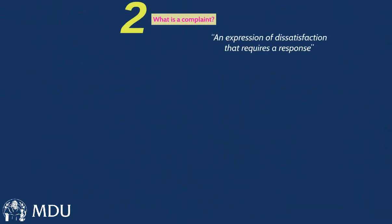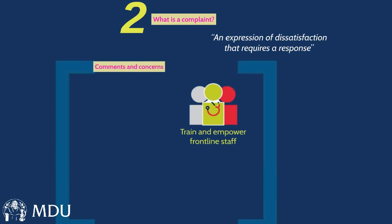I want to talk about identifying what a complaint is. We all recognise a complaint when we see it though it can sometimes be a little bit hard to define. I don't think we should be any more complicated than saying it is an expression of dissatisfaction that requires a response. A lot of our members ask about what constitutes a formal and informal complaint. The statutory framework for complaints says there are complaints that fall under the regulations and must be handled in accordance with them — those can be considered formal. The only ones that don't fall into that are oral complaints resolved to the satisfaction of the complainant within one working day.